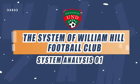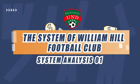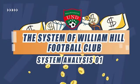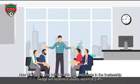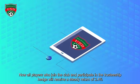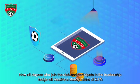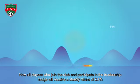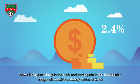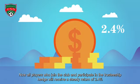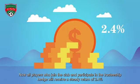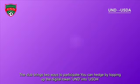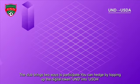Today we will introduce the system of William Hill Football Club. All players who join the club and participate in the trusteeship hedge will receive a steady return of 2.4%. The club brings two ways to participate.